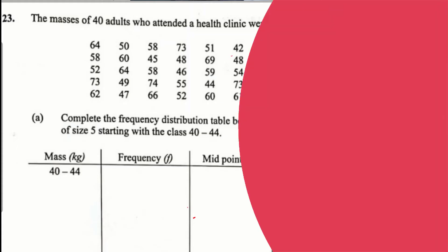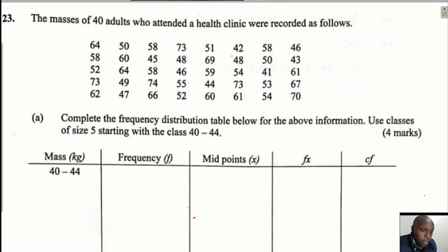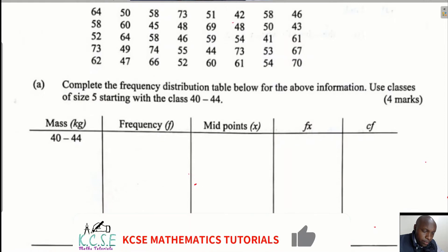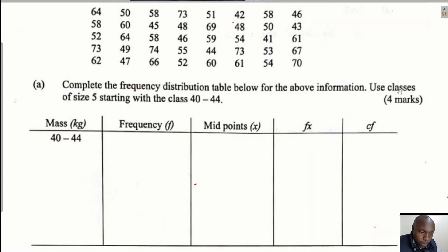Hello everyone and welcome to the lesson on statistics. The question reads: the masses of 40 people who attended a health clinic were recorded. The first part asks us to complete the frequency distribution table using classes of size 5, starting with the class 40 to 44.